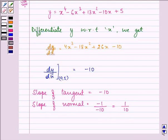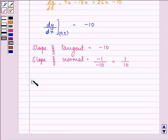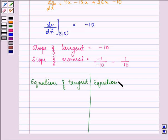Now let us find out equation of the tangent. Equation of tangent in one side and equation of normal in the other side. We know that equation of tangent is y minus y1 equal to m that is slope times (x minus x1).